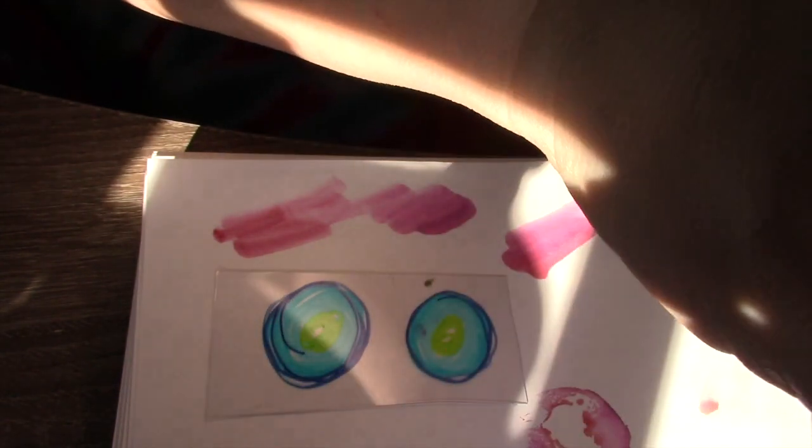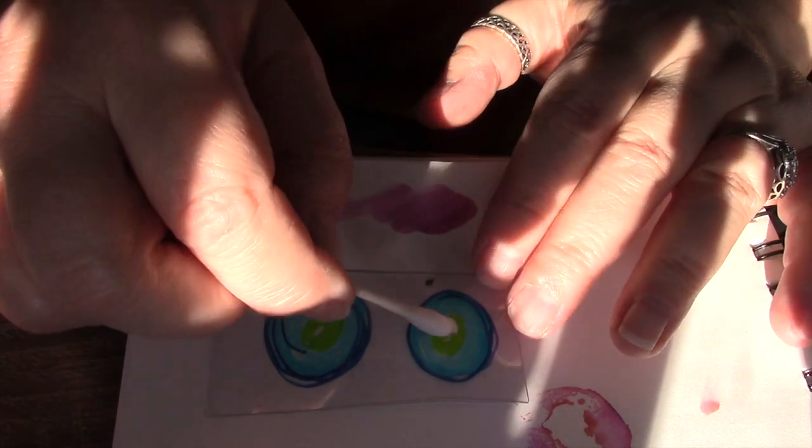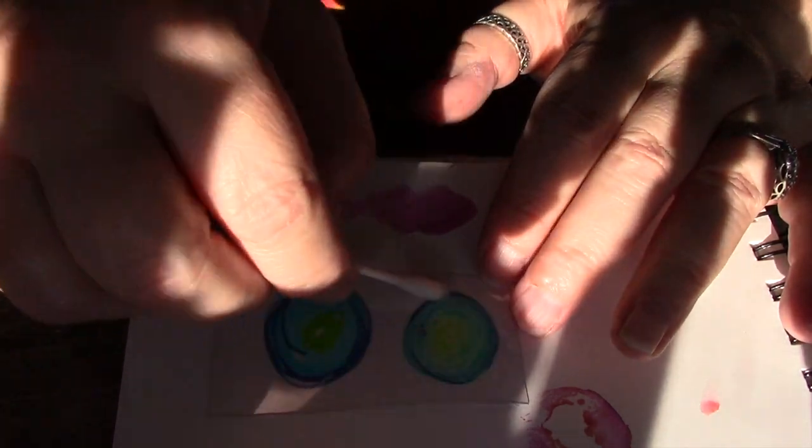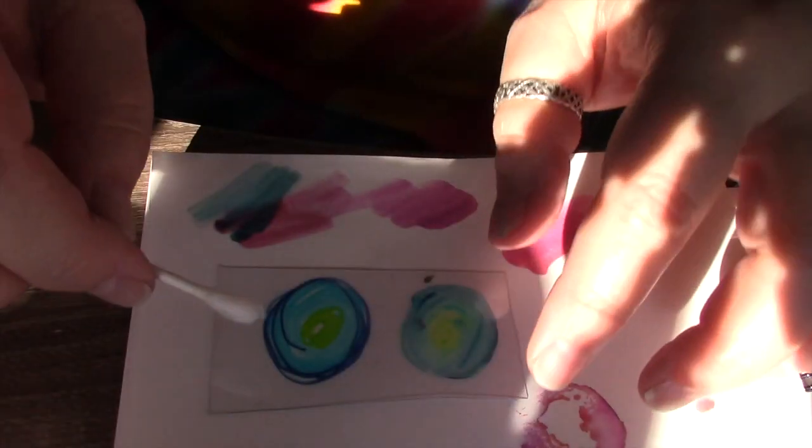I'm going to start from the middle and work my way out very lightly with the Q-tip wet with rubbing alcohol and blend out that Sharpie. I'm going to wipe the Q-tip off on my paper.